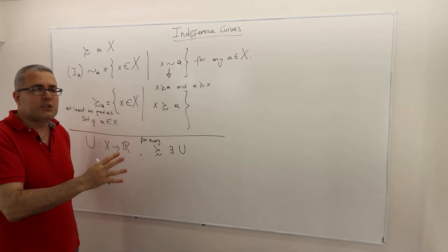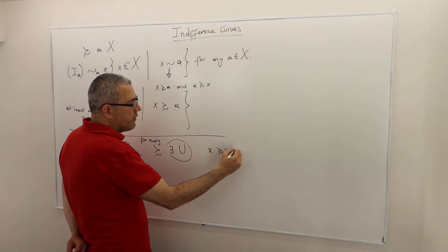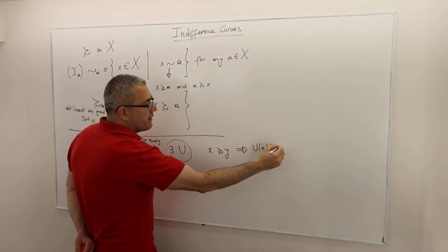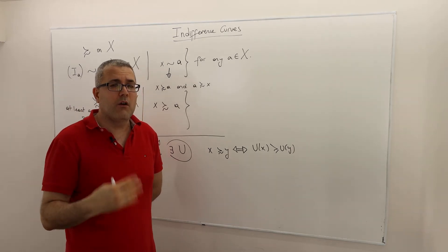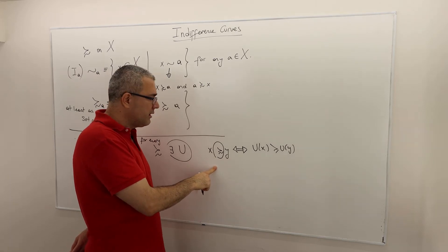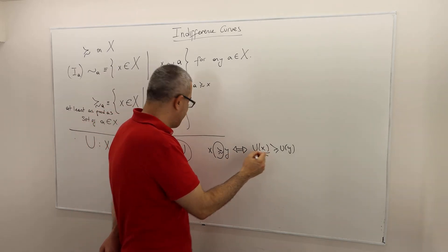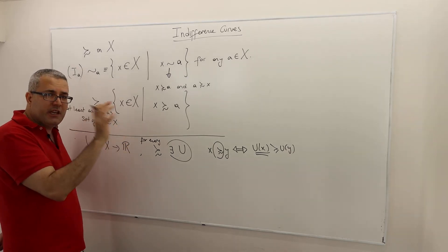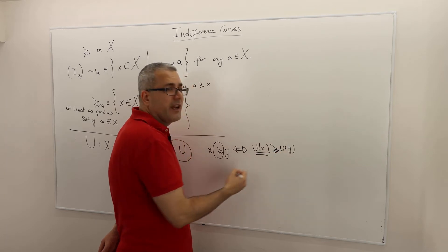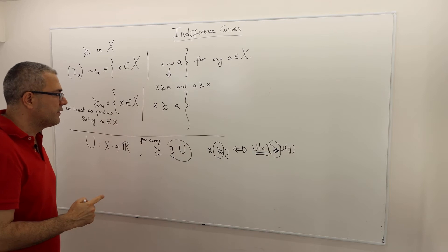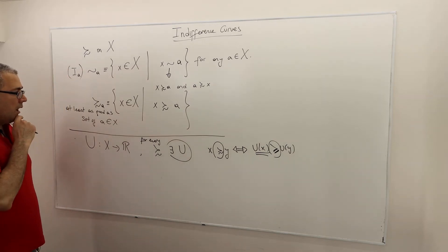For every preference relation with some nice properties we can find a utility function that represents it. That means whenever alternative x is at least as good as y, that also means utility of x is greater than or equal to utility of y, and vice versa. Be careful: the preference relation compares alternatives like apples or bananas, while the utility function attaches real numbers to them — the ≥ sign here is the standard numerical one.